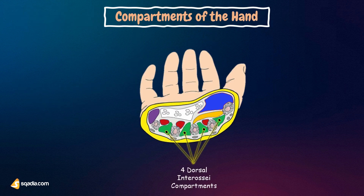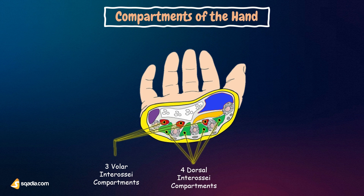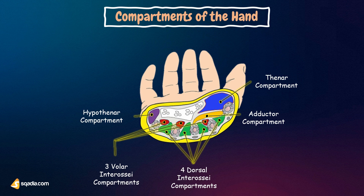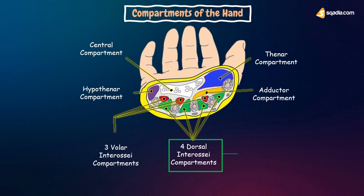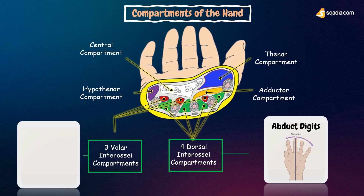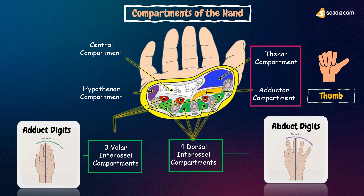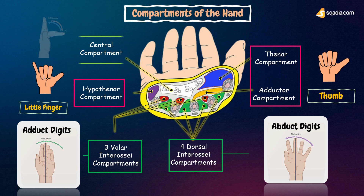Both the extrinsic and intrinsic muscles are organised in osseofascial compartments within the hand. The hand is comprised of eleven separate compartments. The dorsal interossei act to abduct the digits, and the palmar interossei act to adduct the digits. The adductor compartment muscles act on the thumb, while the muscles of the hypothenar compartment act on the small finger. The central compartment muscles cause movement at the MCP joints.